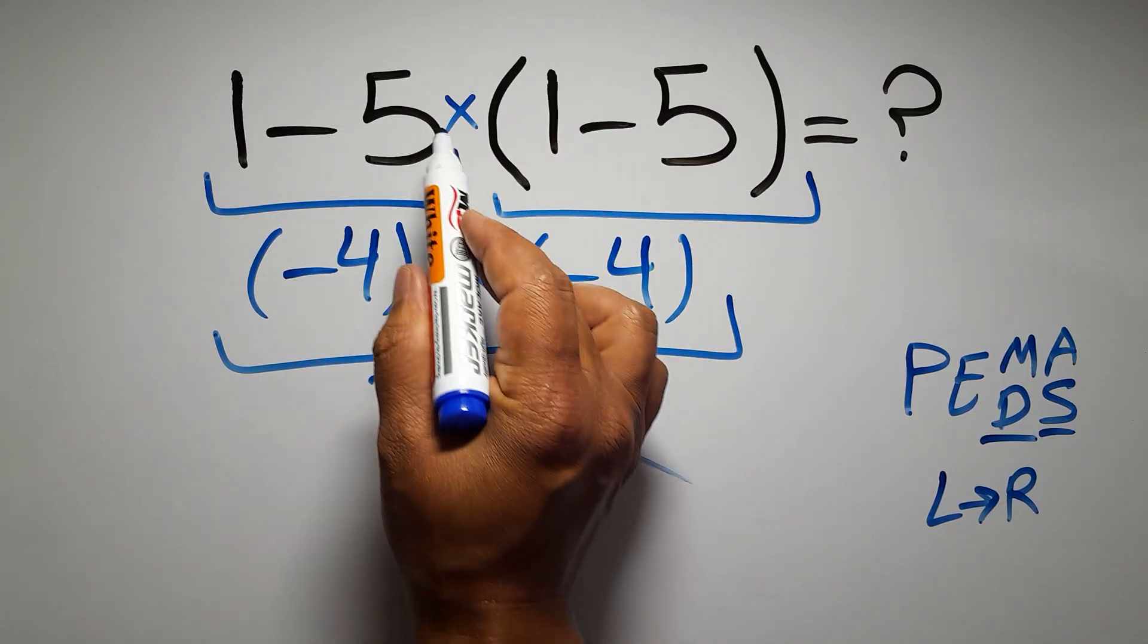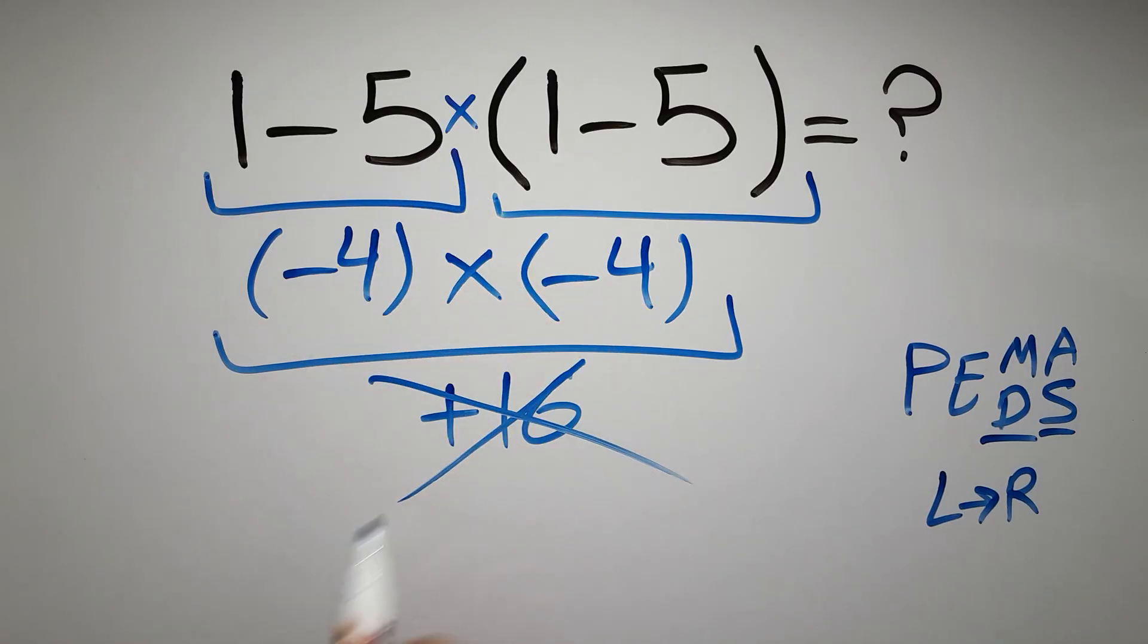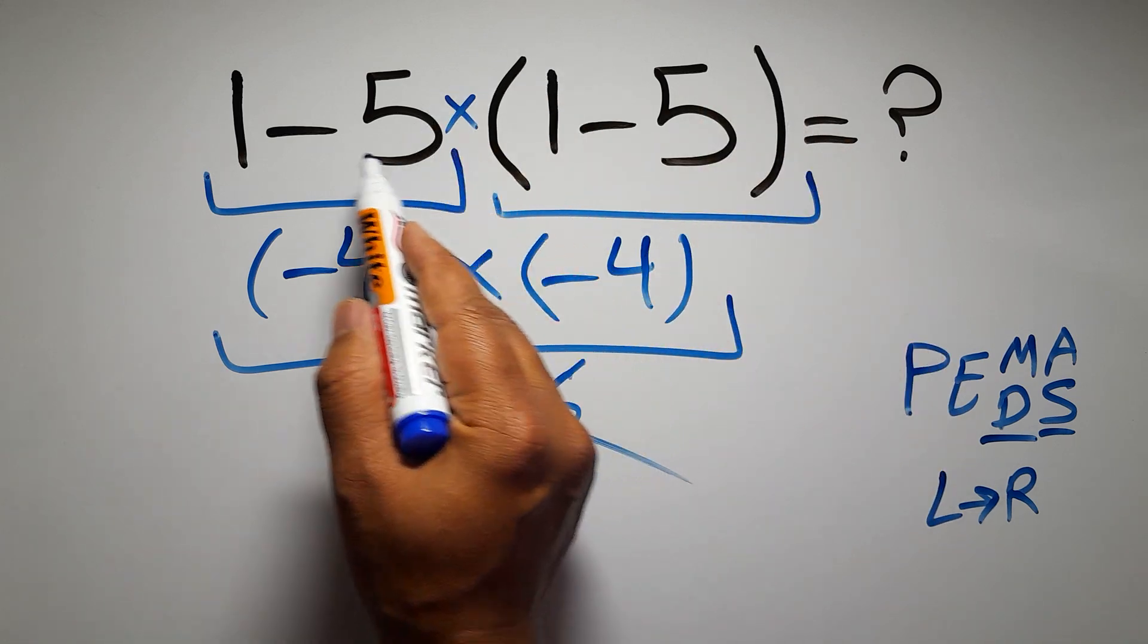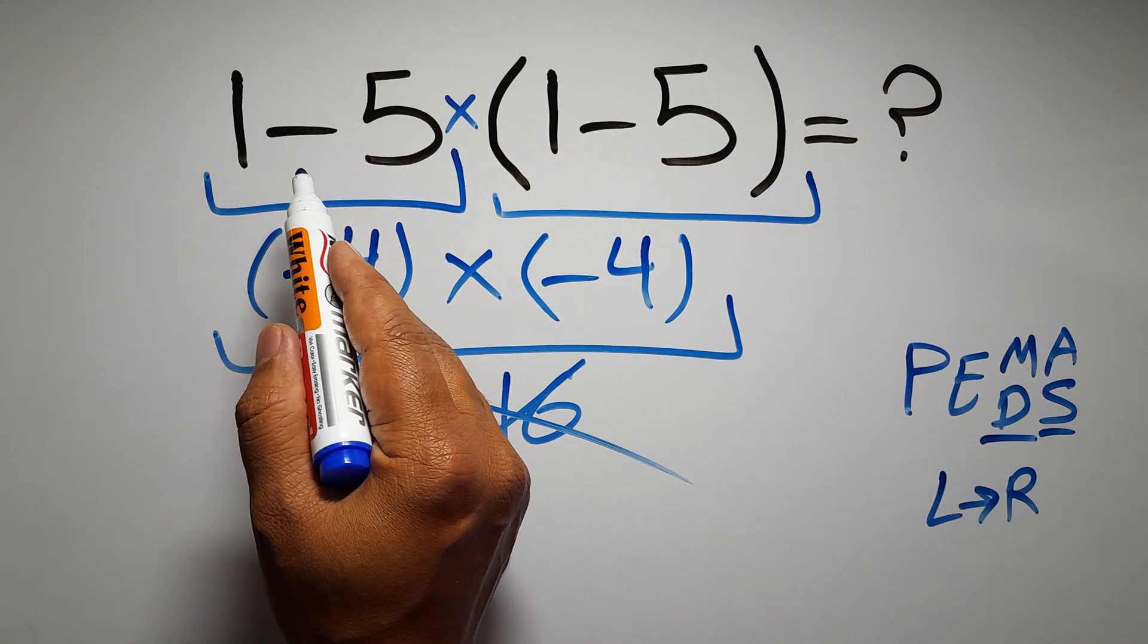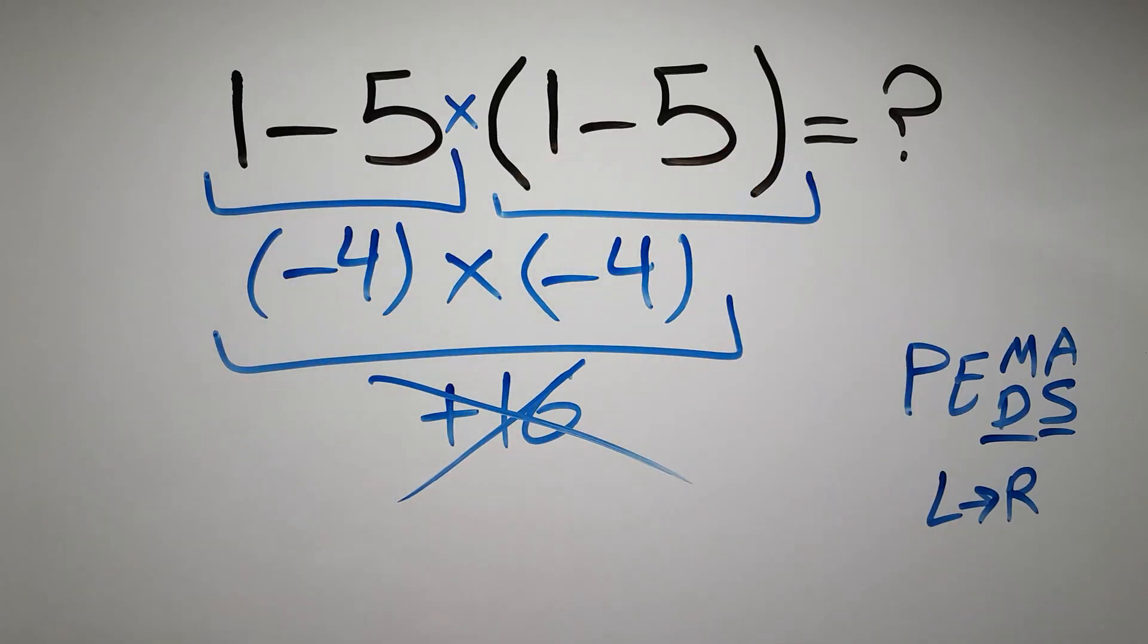So according to PEMDAS, first we have to do this parentheses, then this multiplication, and finally this subtraction. If we do this subtraction before this multiplication or this parentheses, it is wrong.